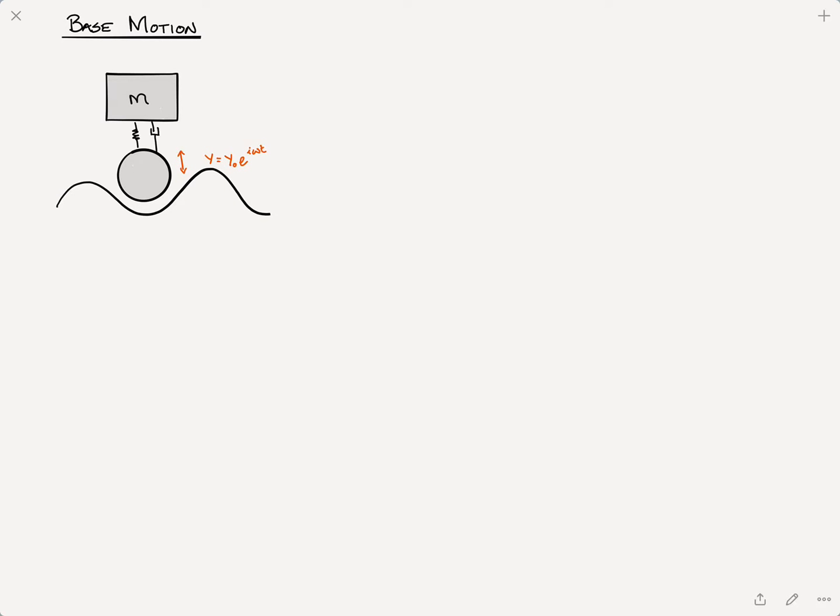In this video, we'll examine base motion and how to incorporate its effects into our structural model. The idea is there's certain circumstances, like the event of a car going down a bumpy road, where the base is excited or a motion for the base is prescribed, as opposed to a force being applied to the mass.